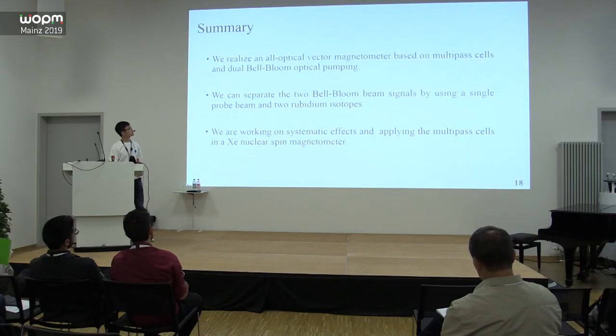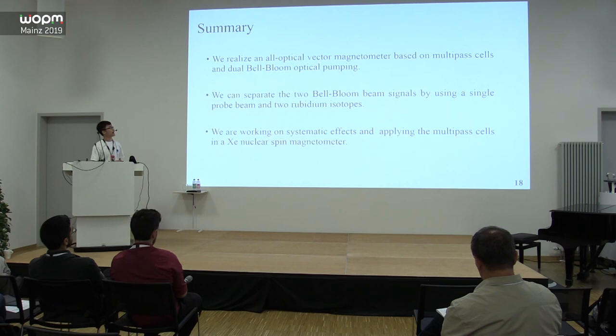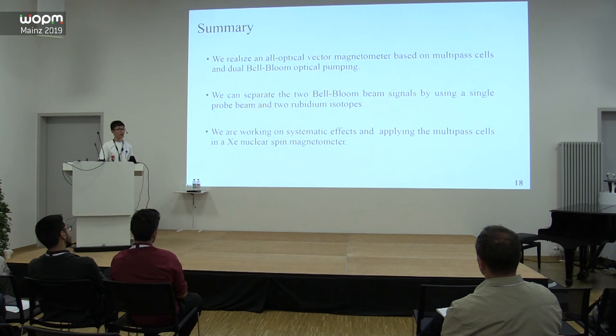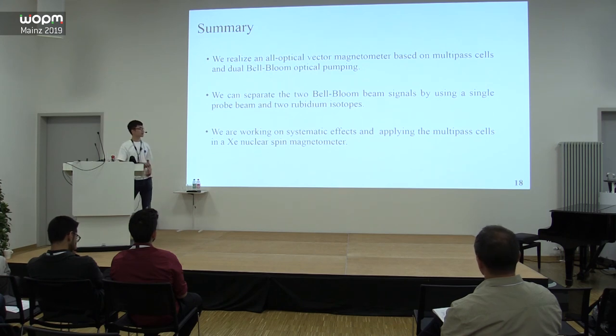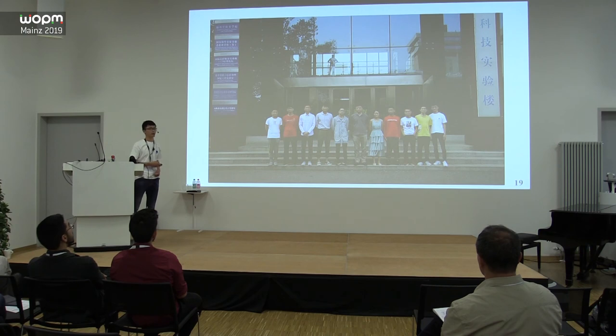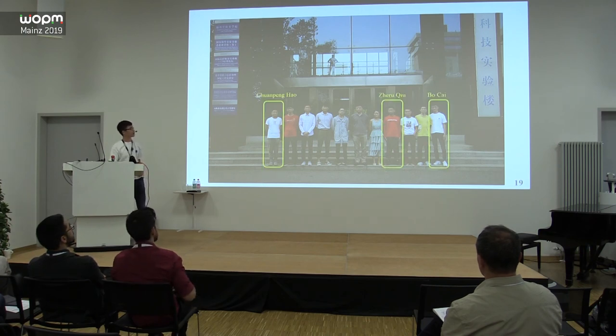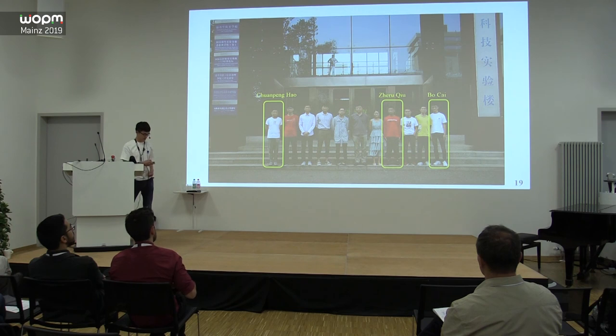In conclusion, we realize an all-optical vector magnetometer based on multi-pass cells and dual Bell-Bloom optical pumping. We separate the two Bell-Bloom beam signals by using a single probe beam and two rubidium isotopes. We are working on systematic effects and applying the multi-pass cells in xenon nuclear spin magnetometers. This is our group. Thank you.